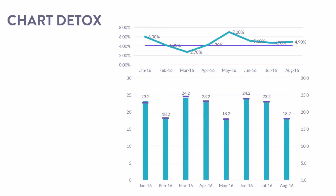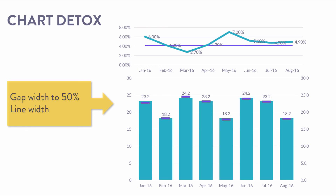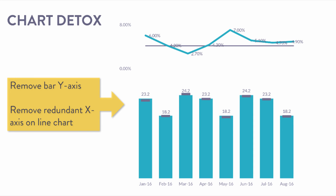These bars are looking a little hungry, so we want to feed them. Changing the gap width to 50% looks much better, and I'll make those little marker lines a bit wider too. I also made the upper line chart line a little bit wider. Next, I remove the grid lines and axis lines — it's really just extra visual noise you don't need for interpretation. I've also removed the bar y-axis, because I added those data labels earlier. Now that we have those labels, we really don't actually need a y-axis.